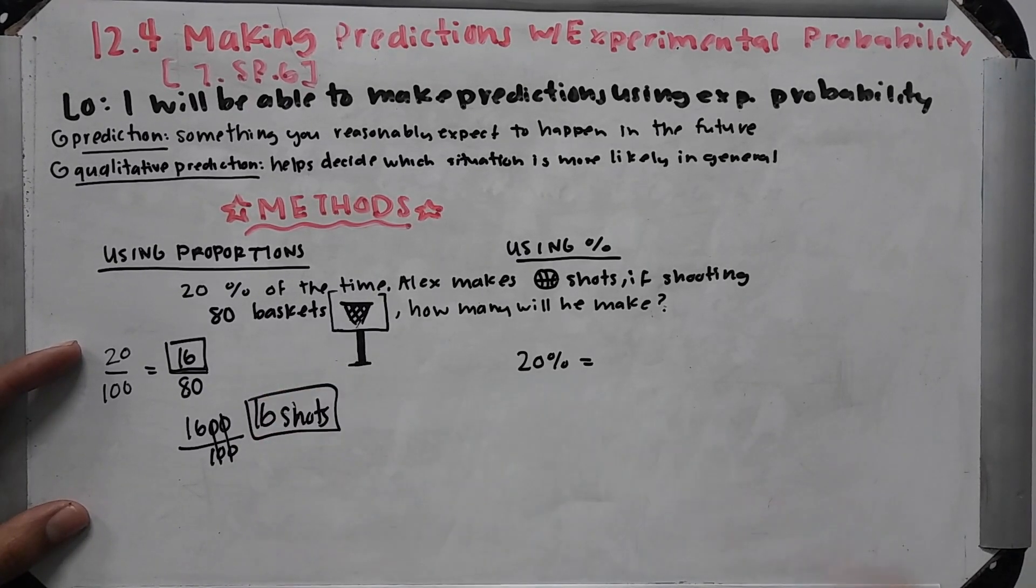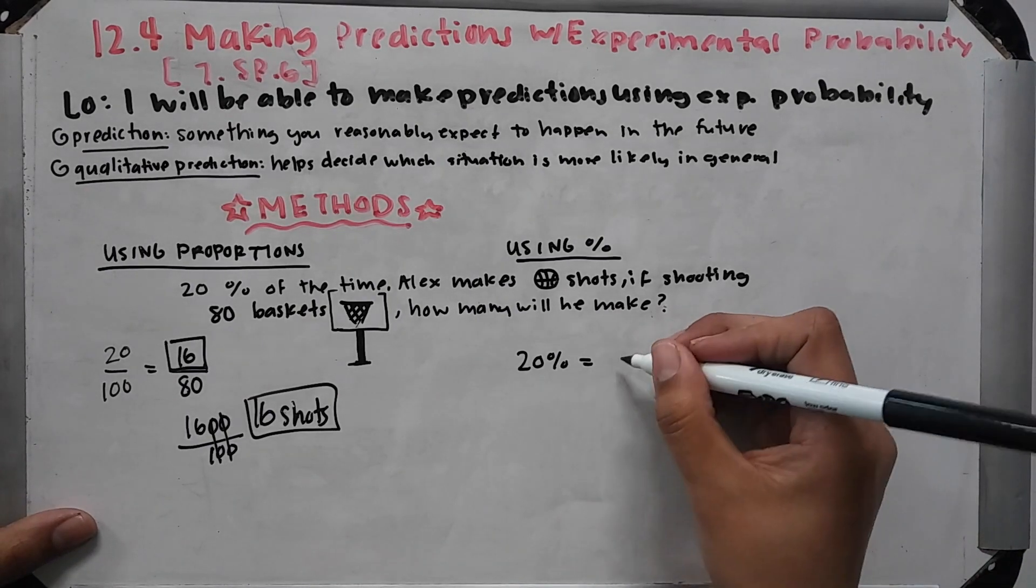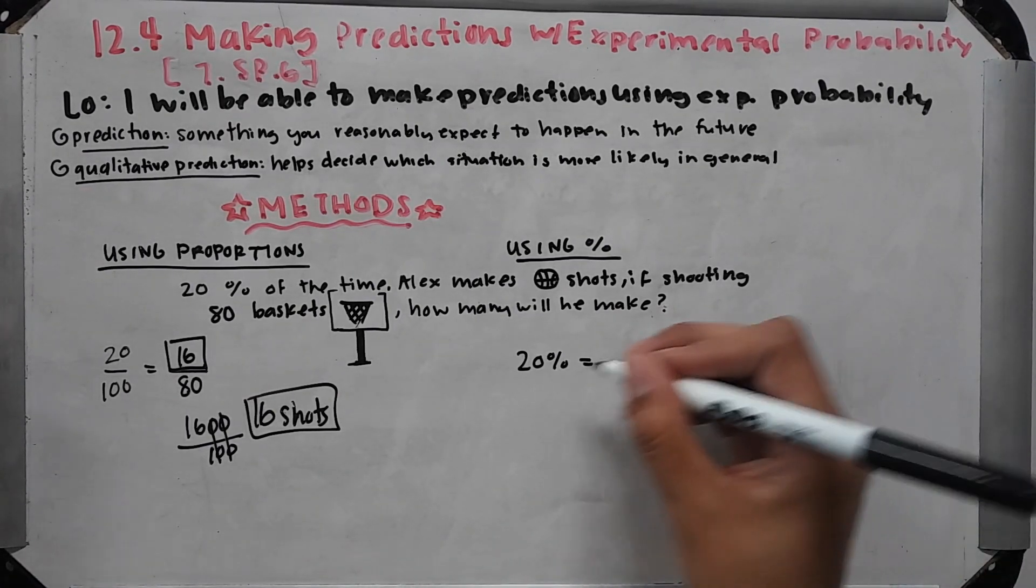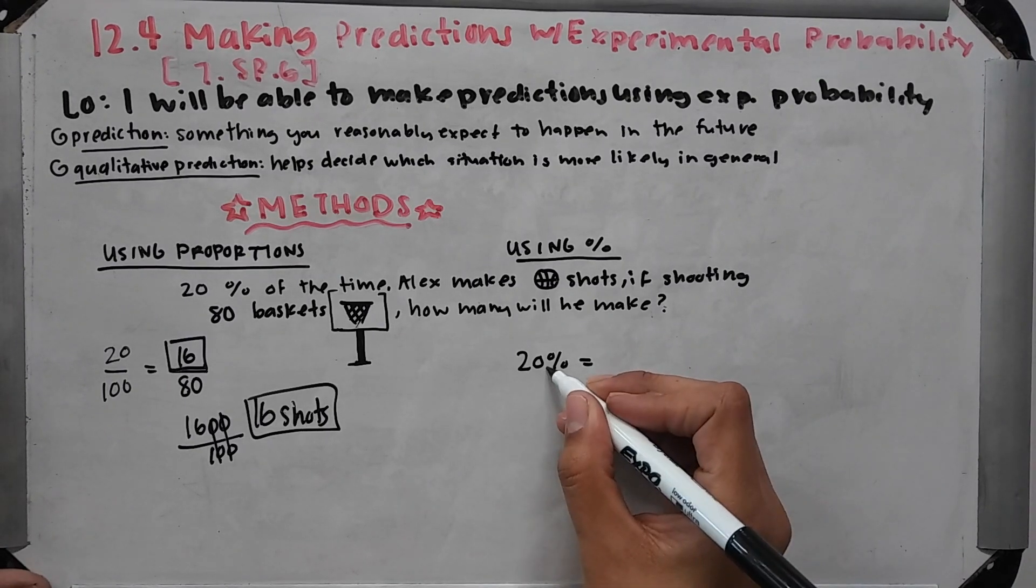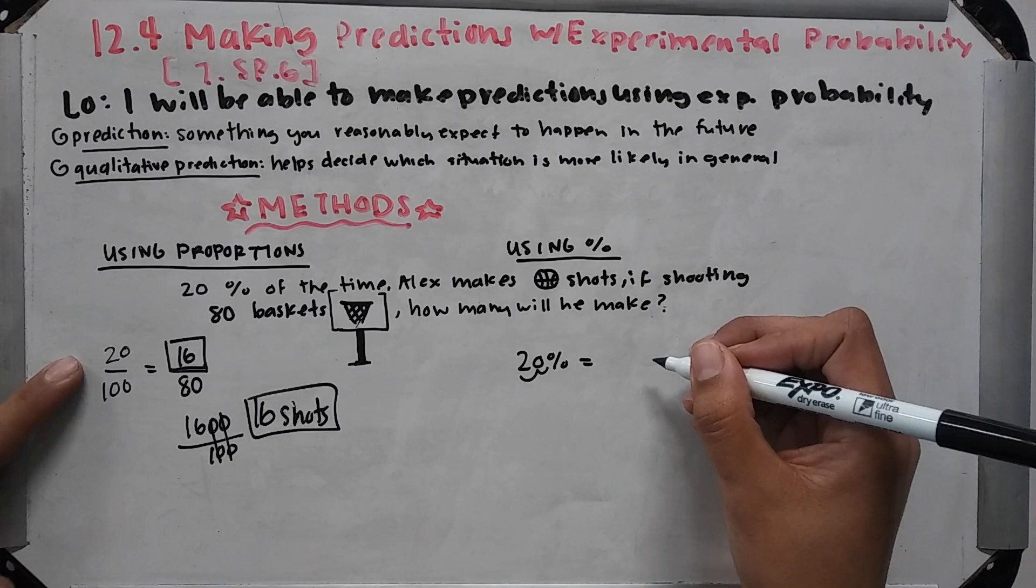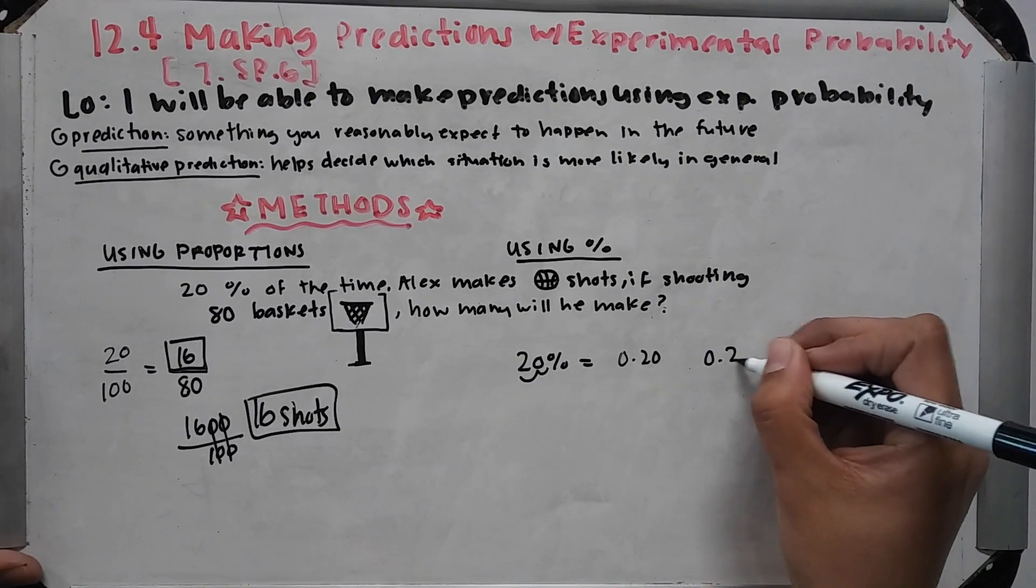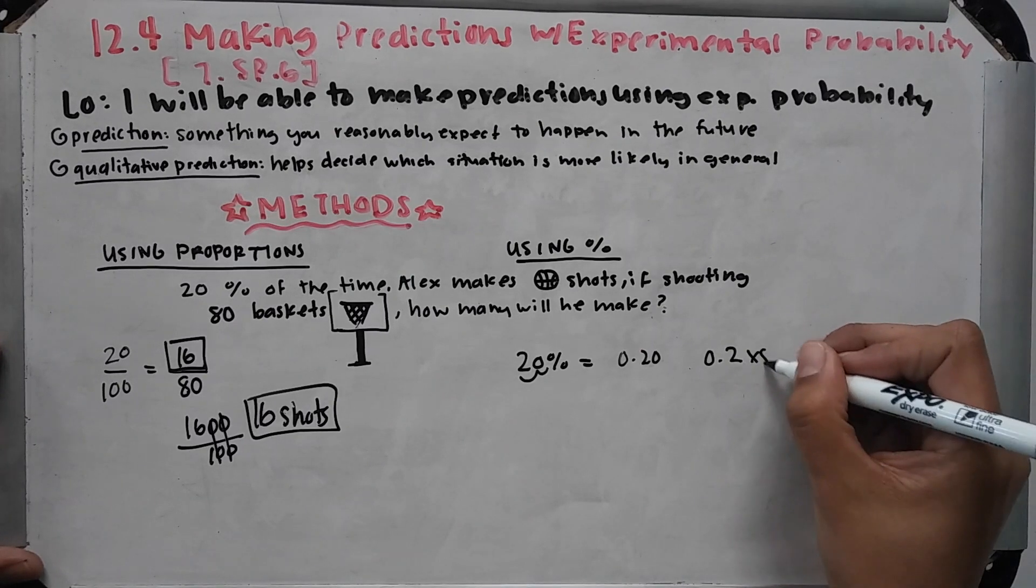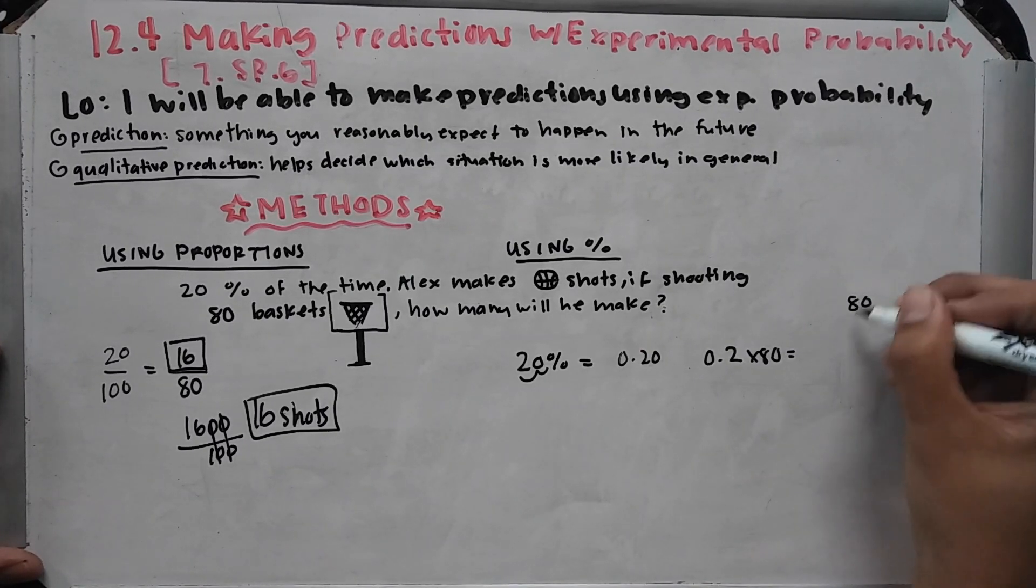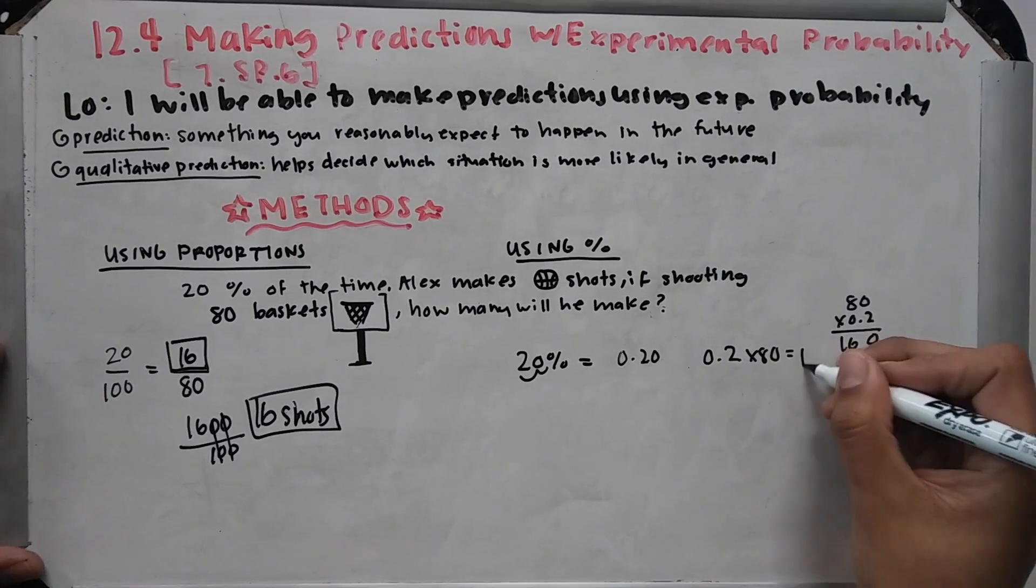Then if I do percentage, I'm gonna change that into a decimal. So remember when I have a percentage, I go twice to the left because I'm dividing by 100. 20 divided by 100 is just this, and then I multiply that times 80. So when I multiply that, I get 16. 16 shots, same answer.